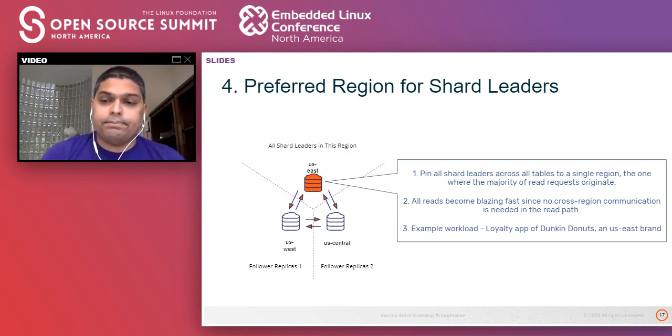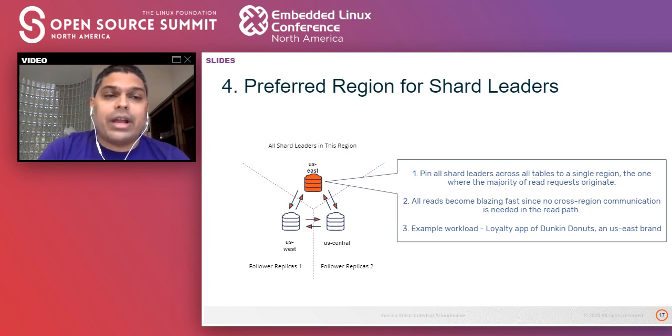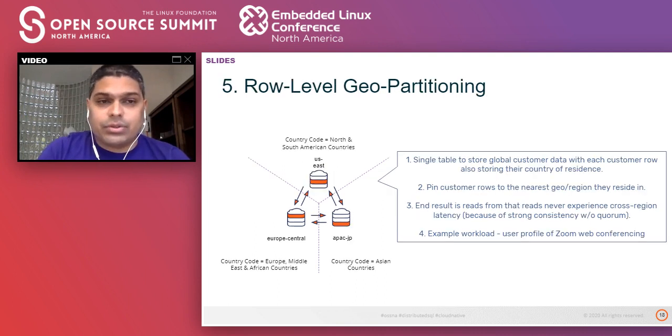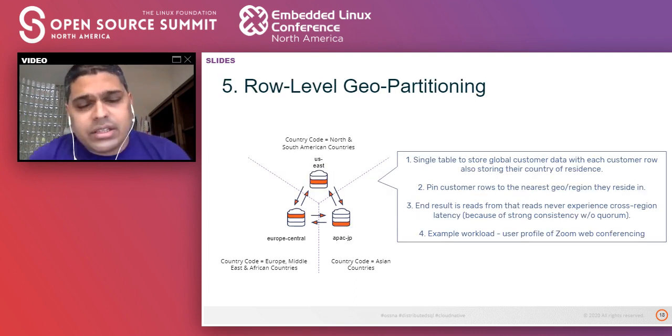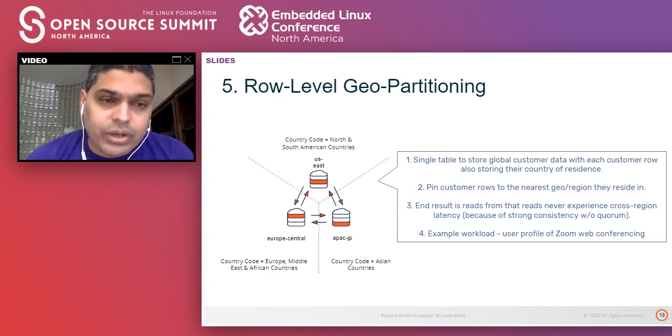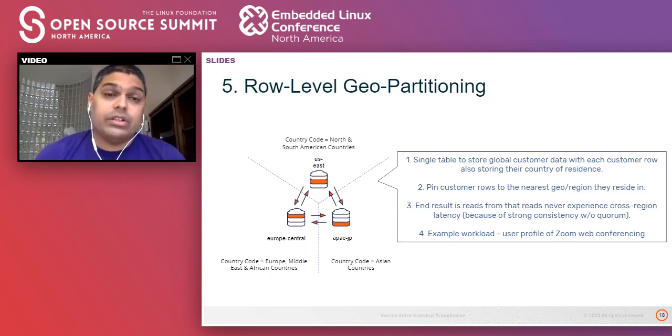By using the per-shard distributed consensus architecture smartly and by giving hints to the cluster at either query time or at cluster creation time — without changing data modeling — we can draw a lot of mileage from the distributed SQL architecture where cross-region latency is non-existent. Now we'll go to the advanced scenarios. One such advanced scenario is known as row-level geo-partitioning.